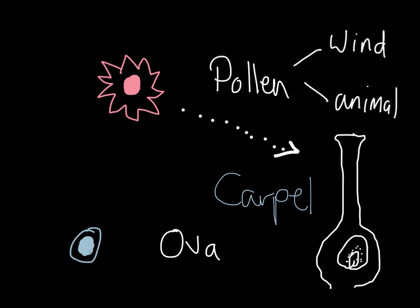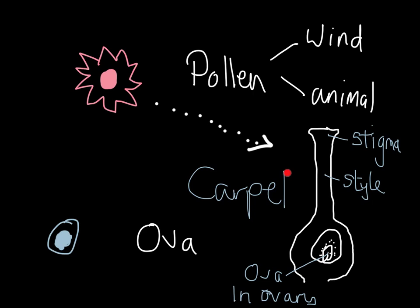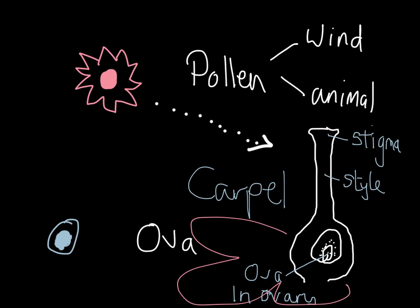The carpel is the name for all of the female part of the flower. The carpel is made up of the stigma, which the pollen lands on, a style, down which the pollen nucleus travels, and the ova, which are in the ovaries down at the bottom. All of this appears inside the flower, right in the middle and centre of the flower, with the petals around the outside.